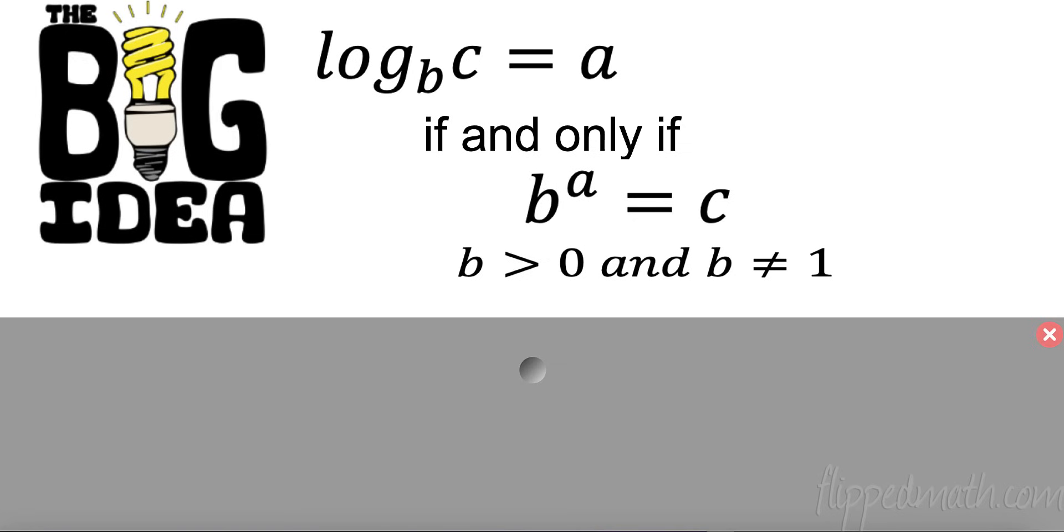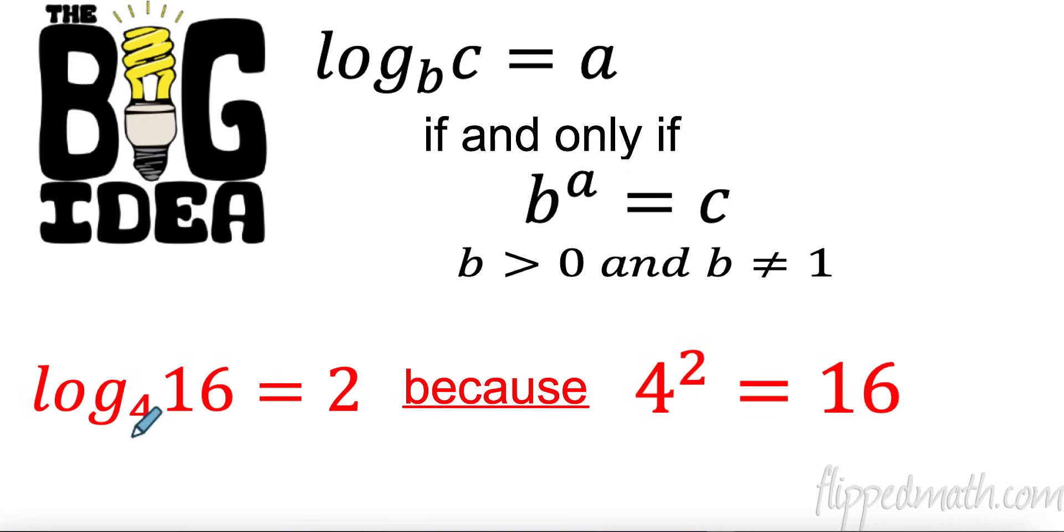So the big idea is this. We now have these things called logs. The log base b of c equals a if and only if b to the exponent of a equals c. For example, if I have a base 4, log base 4 of 16 is 2 because 4 to the second equals 16. Because 4 times 4 equals 16, the value of this log when the base is 4 of 16, how many exponents do I need of this base to get to 16? I need 2. That's what logs are.